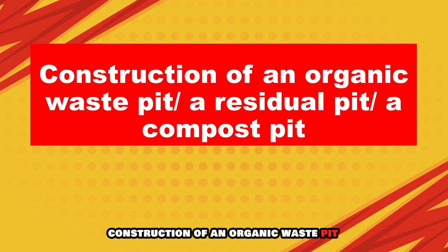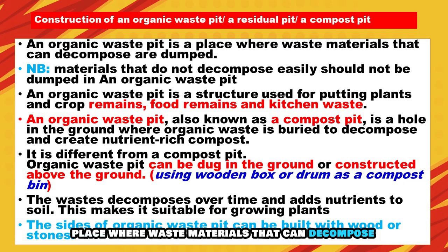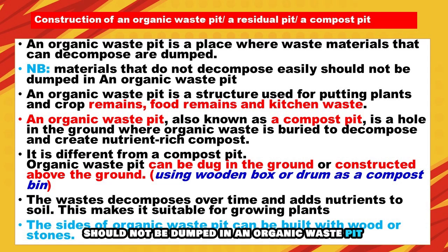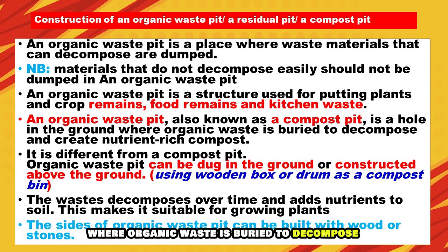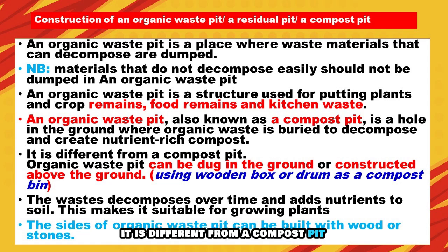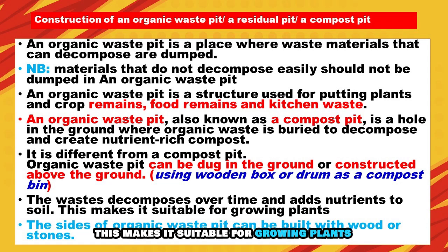Construction of an organic waste pit, also called a residual pit or compost pit: An organic waste pit is a place where waste materials that can decompose are dumped. Materials that do not decompose easily should not be dumped in an organic waste pit. It is a structure used for putting plant and crop remains, food remains, and kitchen waste. It is a hole in the ground where organic waste is buried to decompose and create nutrient-rich compost. The organic waste pit can be dug in the ground or constructed above ground using a wooden box or drum as a compost bin. The waste decomposes over time and adds nutrients to the soil, making it suitable for growing plants.